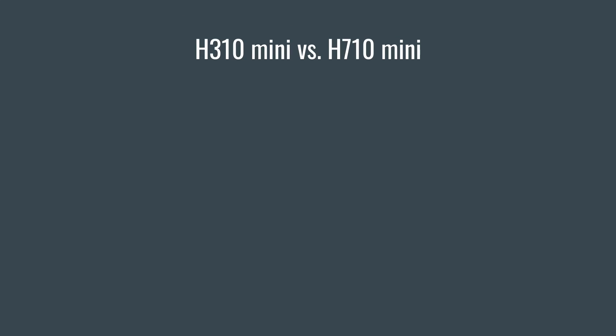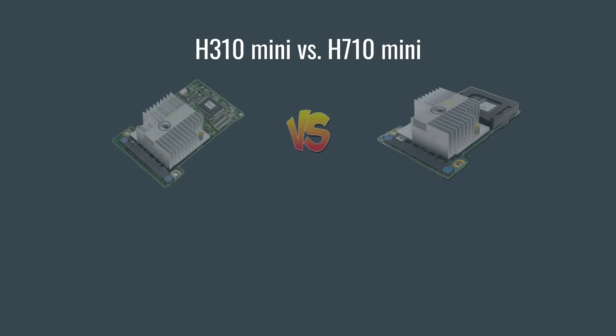For the remainder of this video I'm going to discuss your HBA choices for Dell servers with the mini monolithic slot. Basically it comes down to two choices: the H310 mini with IT mode firmware, or the H710 mini with IT mode firmware.